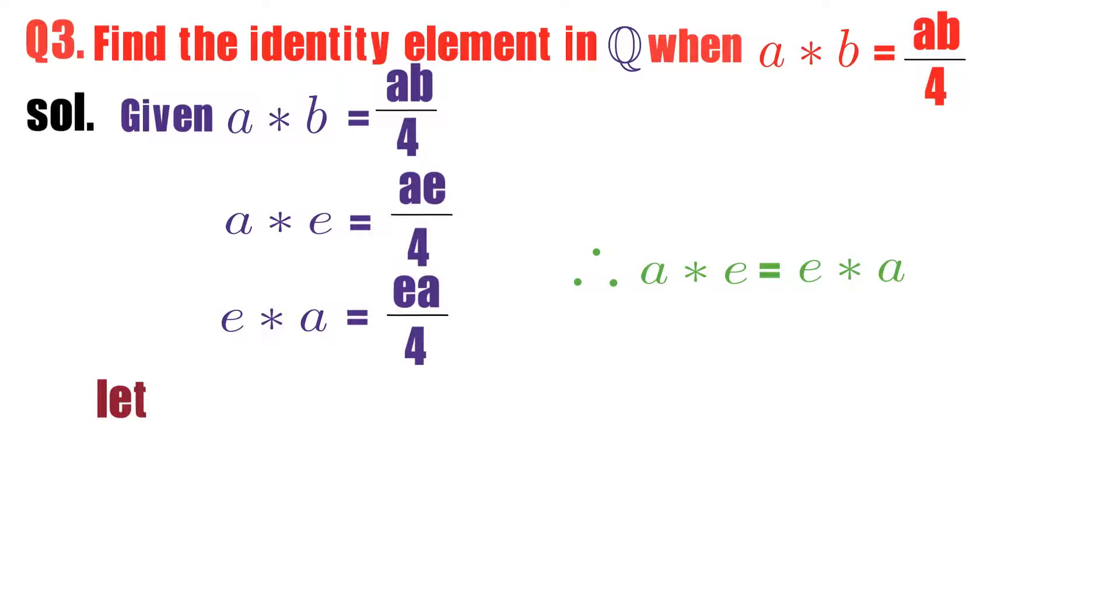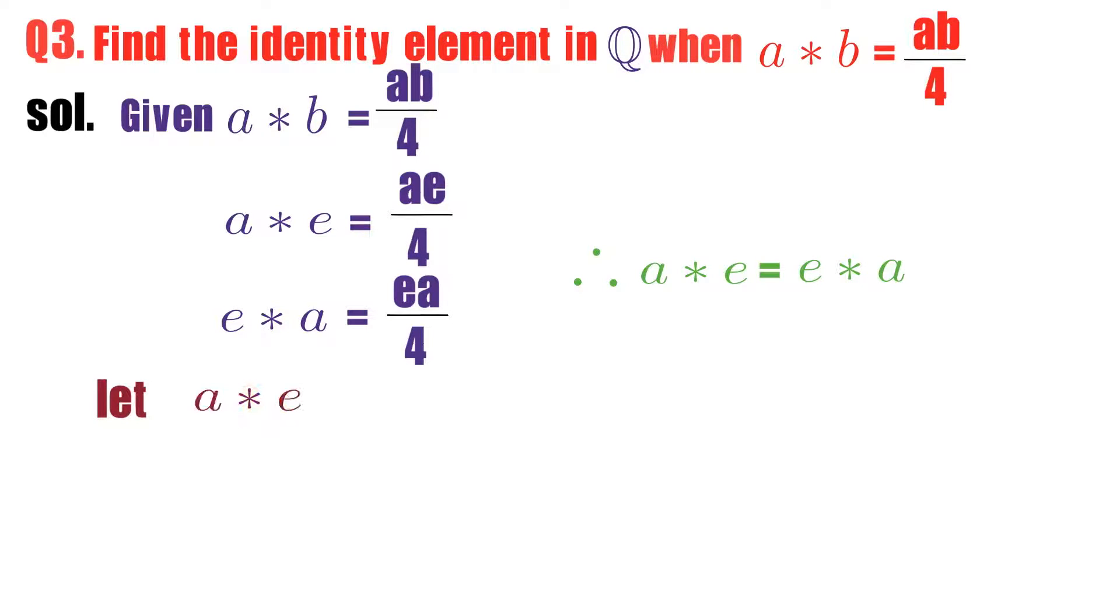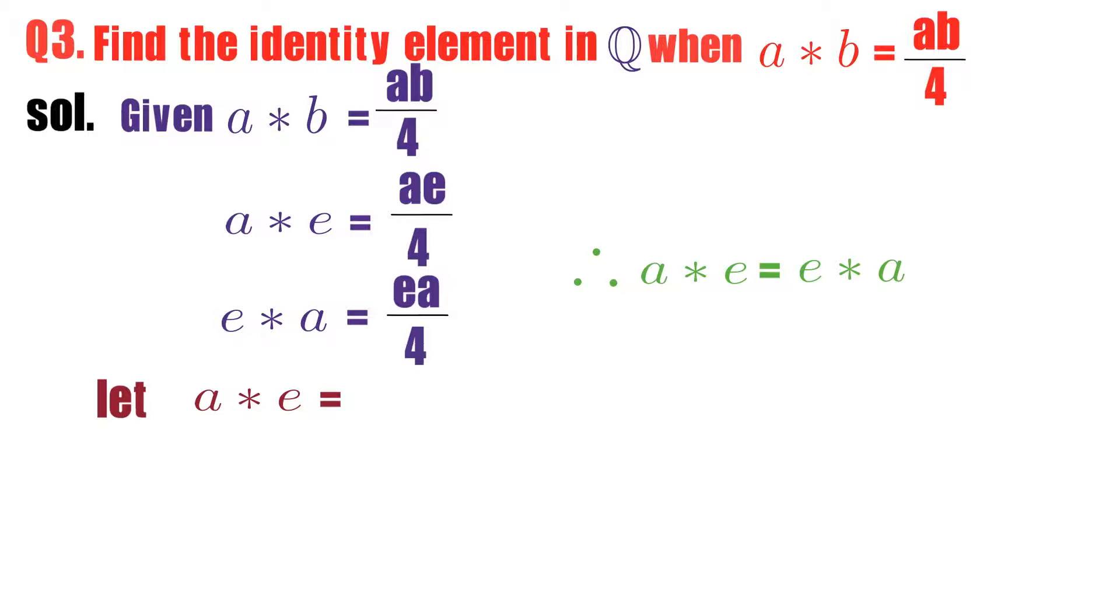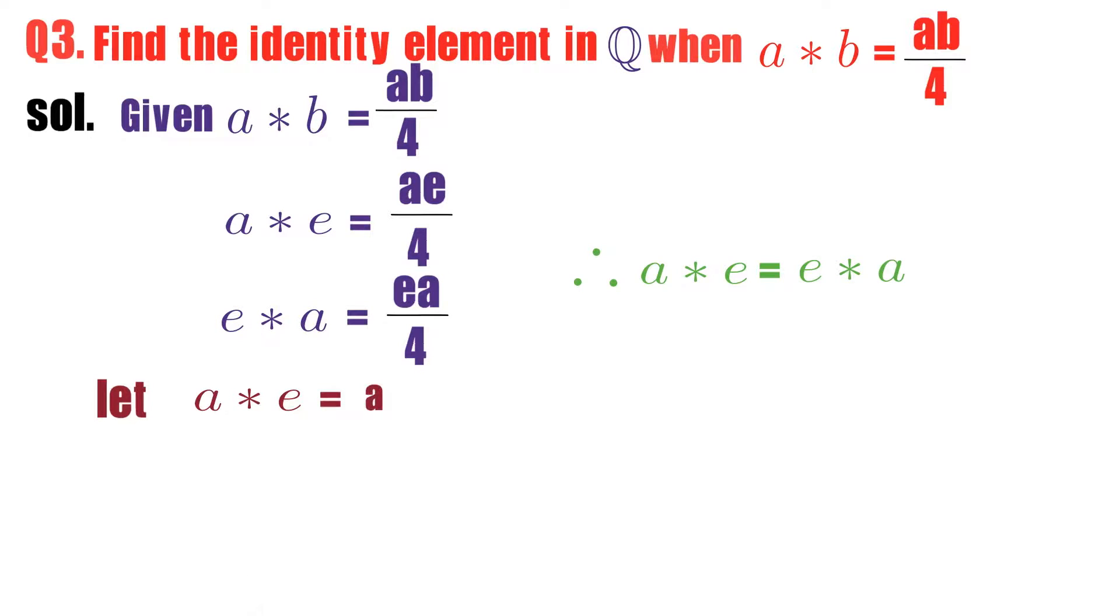Once you confirm that a star e is same as e star a, you take either a star e equals to a or e star a equals to a. I take a star e equals to a. What is a star e? ae by 4. ae divided by 4 equal to a. If you observe here, a will get cancelled and you will get e is equal to 4.